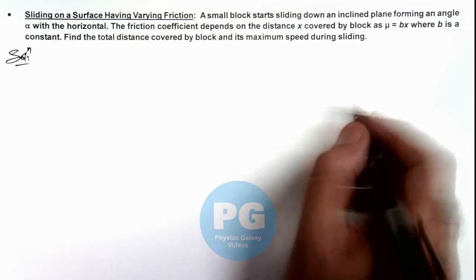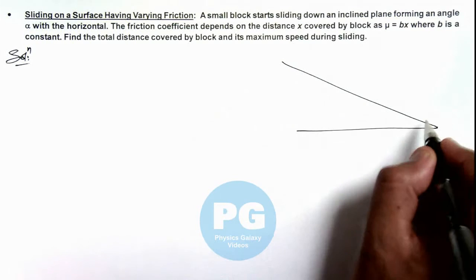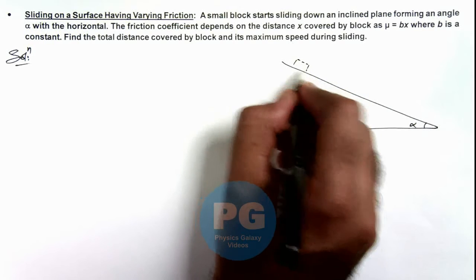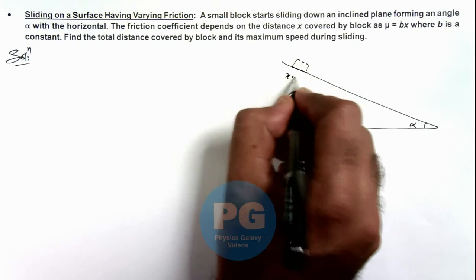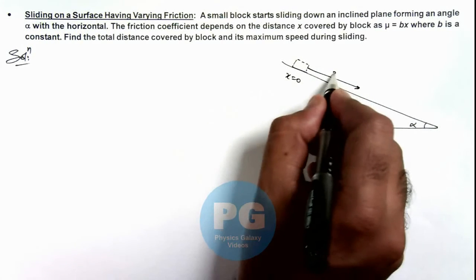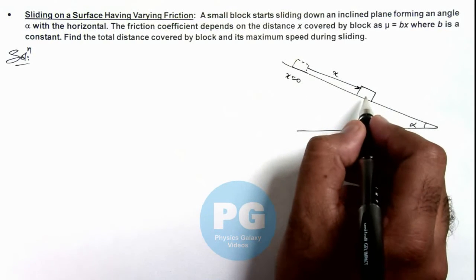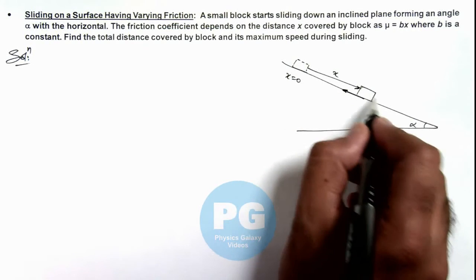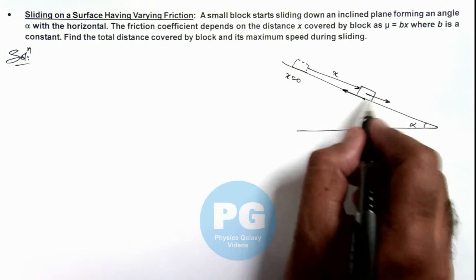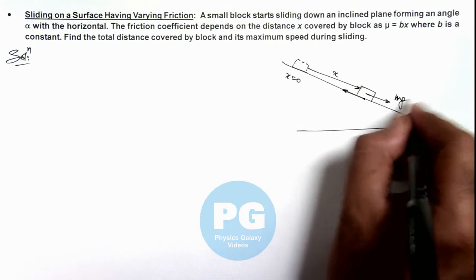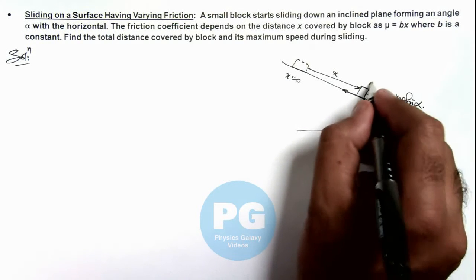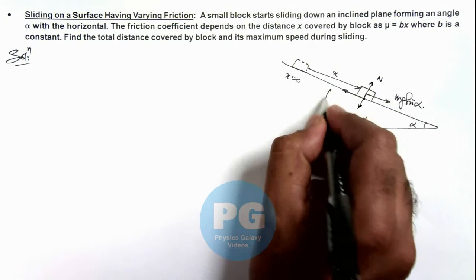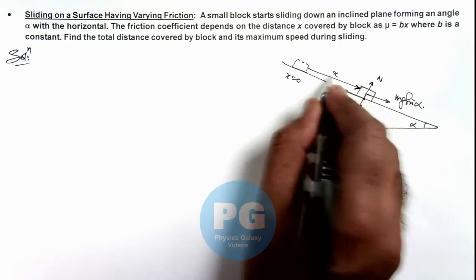If we draw the situation, this is the incline with angle of inclination alpha, and a block starts sliding from x equal to zero. When it travels a distance x and reaches a position, it experiences friction in the backward direction. The component of gravity in the forward direction is mg sine alpha, and the normal reaction is mg cosine alpha. So the value of friction is mu times N, and mu depends on the value of x.